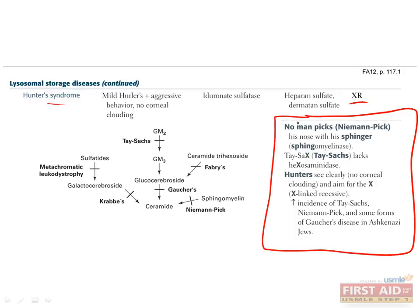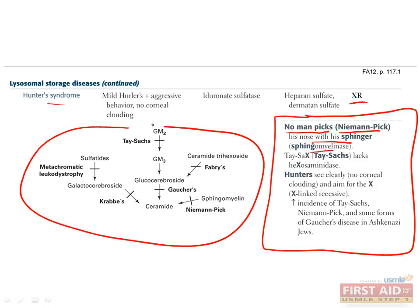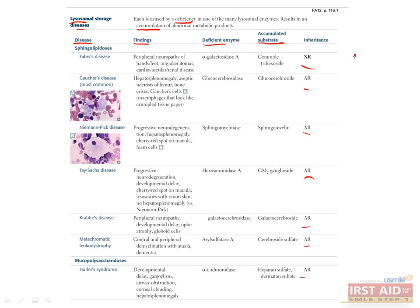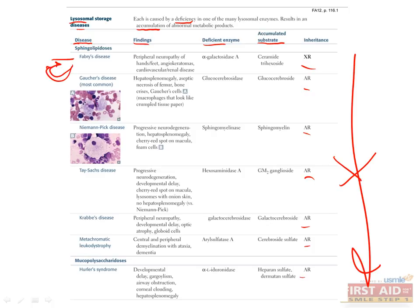We've provided some mnemonics to help you remember these. For example, to remember that Niemann-Pick results from a deficiency in sphingomyelinase, you can use the mnemonic: 'No Man Picks His Nose With His Finger.' This diagram can help you visualize where each deficiency lies in the pathway, though you don't have to memorize it for your exam. I recommend memorizing these in a methodical manner — become familiar with each disease before moving on, and review previously learned ones as you progress, so you've seen the earlier ones multiple times by the end. Returning to quiz yourself often will be helpful.